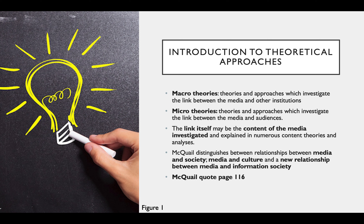McQuail looks at the relationship between media and society, media and culture, and the relationship between media and the information society. He also has his own quote: 'There is no neat system for characterizing the available theories. These typologies are fragmentary and selective, sometimes overlapping or inconsistent, often guided by conflicting ideologies and assumptions.'